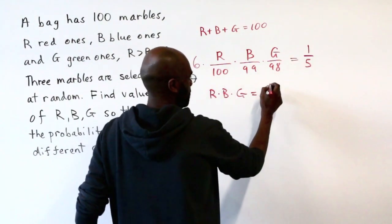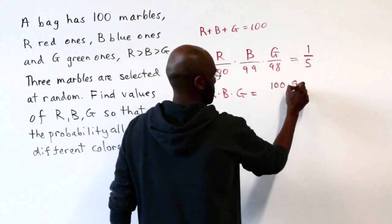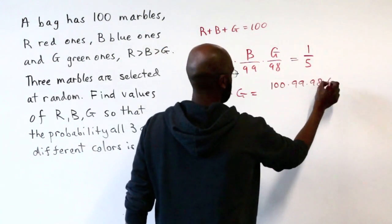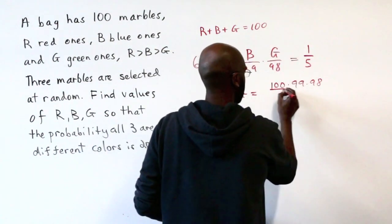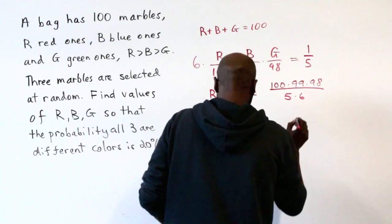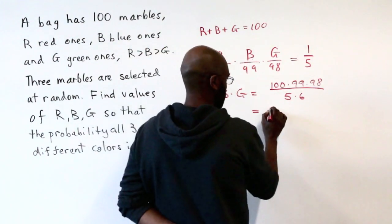We can rearrange this expression to get 100 times 99 times 98 divided by 6 divided by 5, and then prime factorize everything on the numerator and the denominator.